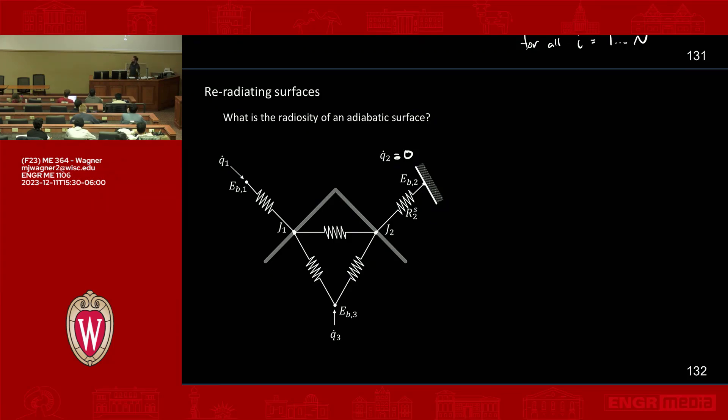Well, that means that there's no heat transfer across this resistance. And if there's no heat transfer across the resistance, what does that say about the potentials on either side of that resistance? If you have a circuit and you have zero current across the resistor, what does it say about the voltage on either side of the resistor? It's the same. It's equal.